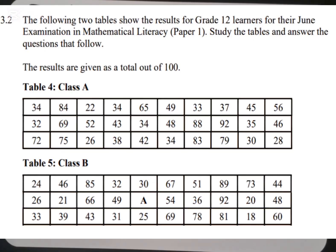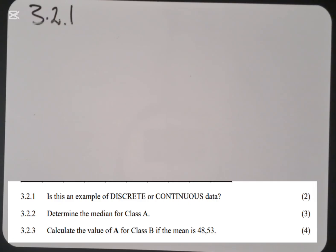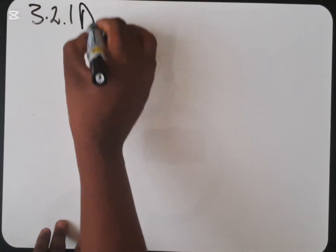So you should not forget the kind of information that we have. We are having marks of learners out of 100. And the most important thing is to remember that when a learner receives the scripts or the marks, a teacher needed to mark and count all the ticks. So this information was obtained through counting. Let's check the first question 3.2.1. Is this an example of discrete or continuous data?